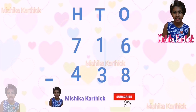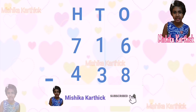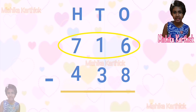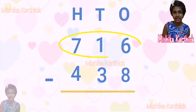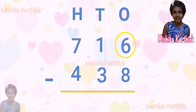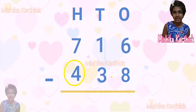Let's solve another example. 716 minus 438. 716 means 700, 1 ten, 6 ones. Next, 438 means 400, 3 tens, 8 ones.